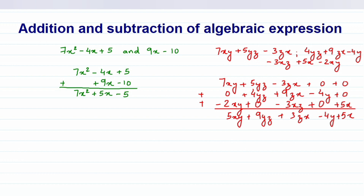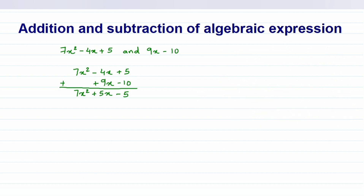Now I'll show you how to do the subtraction. I'll take the same first problem. When you're subtracting, the signs will change — that's a very important point. You have to change the signs of the expression which is below. For example, here I have a plus, so it will become minus. And minus will become plus. Remember, whenever we're subtracting, we have to change the signs: plus becomes minus and minus becomes plus, and the new signs are what you follow.